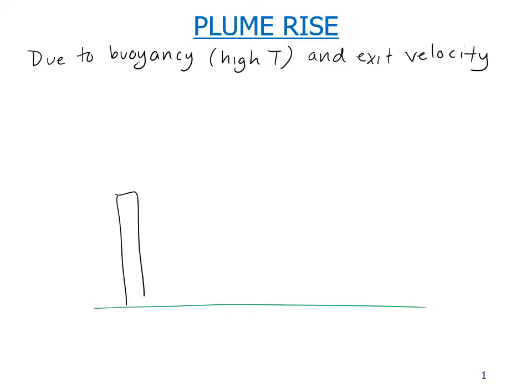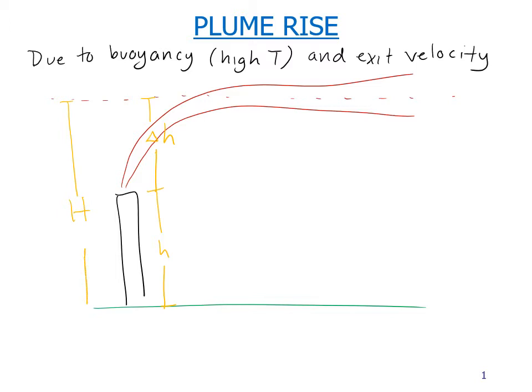So here's our stack. Let's draw a picture of our plume, maybe it looks something like that, where the center line of the plume is clearly well above the height of the stack. Let's say it's there. The height of the stack is lowercase h, the height of this plume rise we're going to call delta h, and altogether it gives us the total height of the plume which is capital H.